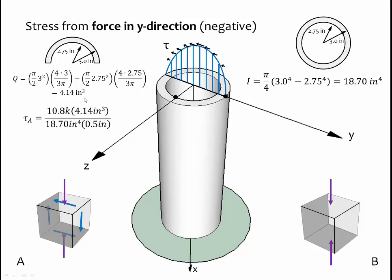Now we can plug those values into our shear stress equation. This first term is our shear force, 10.8 kips. The next term is Q divided by I, our moment of inertia, and divided by T. T is the width of the member at the point where the stress is being evaluated, parallel to the neutral axis. We're calculating stress on the neutral axis, so the width is the width of two pipe walls. The pipe wall is 0.25 inches, so two times that is 0.5 inches. And we get a shear stress at point A equal to 4.78 ksi.